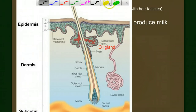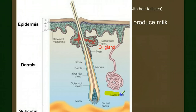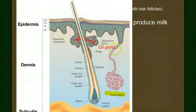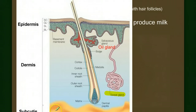We also see in this diagram a sweat gland. Sweat is an excretion organ that gets rid of water, ammonia, and some salts from the body's surface. As sweat evaporates from the skin's surface, it helps cool the body, playing a role in temperature regulation. It's also a derivative of the skin.